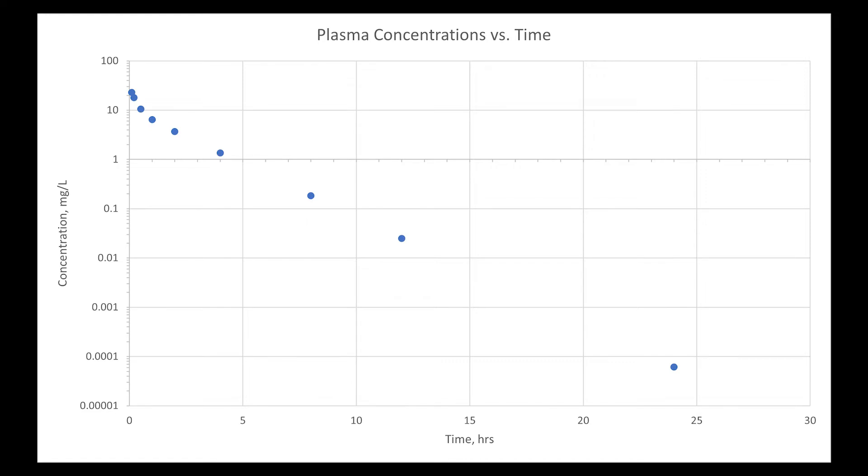So now we can use the method of residuals to find the equation. We start with the late phase, which represents the b or the beta side of the equation. We need the intercept and the slope. And to find the intercept, we need to extrapolate.